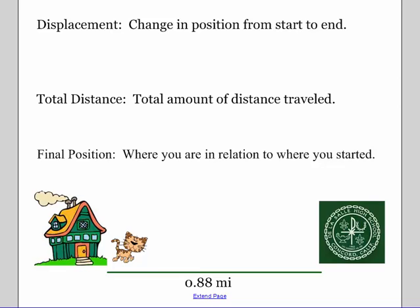It's important that you understand the difference between all of these concepts. Displacement is the change in position from start to end of time. So I'm a cat, this is my house, this is De La Salle High School, and I walk along the path to De La Salle, and then I turn around and I walk back to my house. So my displacement is technically zero. Change in position from start to end time. My displacement is technically zero.